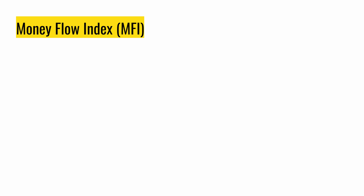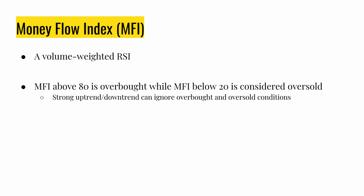Moving on from OBV, let's look at the Money Flow Index (MFI). MFI combines volume and price — it is essentially a volume-weighted RSI. RSI is a popular indicator telling if a stock is overbought or oversold. Similarly, MFI above 80 means overbought, and below 20 means oversold. Like RSI, in a strong trend it can remain overbought or oversold for a long time. MFI is typically used to signal reversals — overbought conditions suggest a retraction downward, and oversold conditions suggest a reversal to the upside.